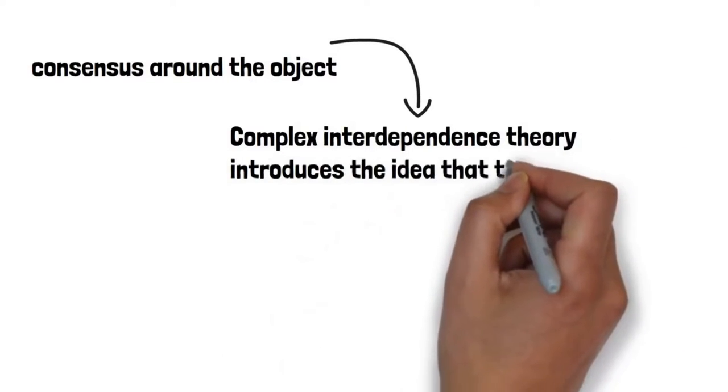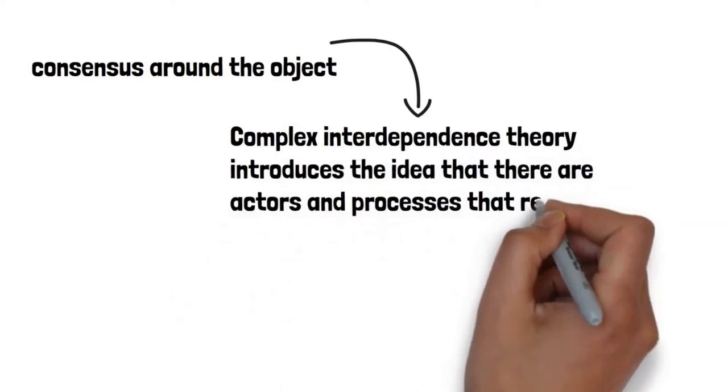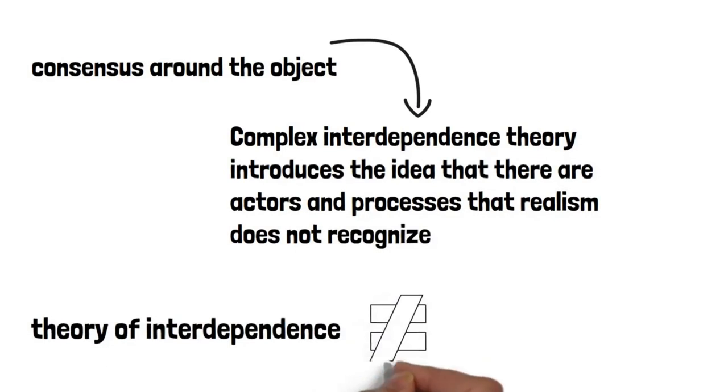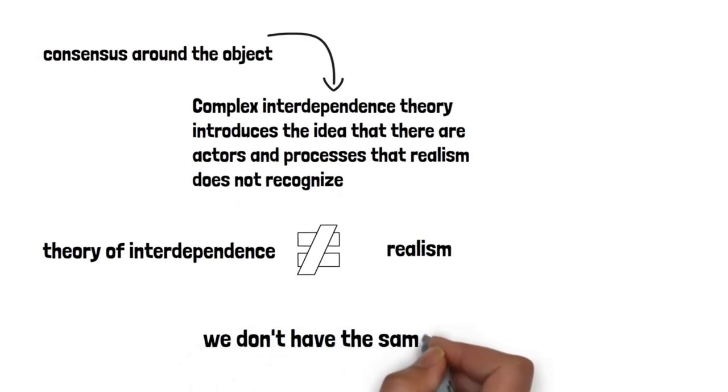Complex interdependence theory introduces the idea that there are actors and processes that realism does not recognize. Thus, the set of phenomena that the theory of interdependence considers as part of the international is not the same as the set of realism, so we don't have the same object. Therefore, the idea of a positivist science would not be viable.